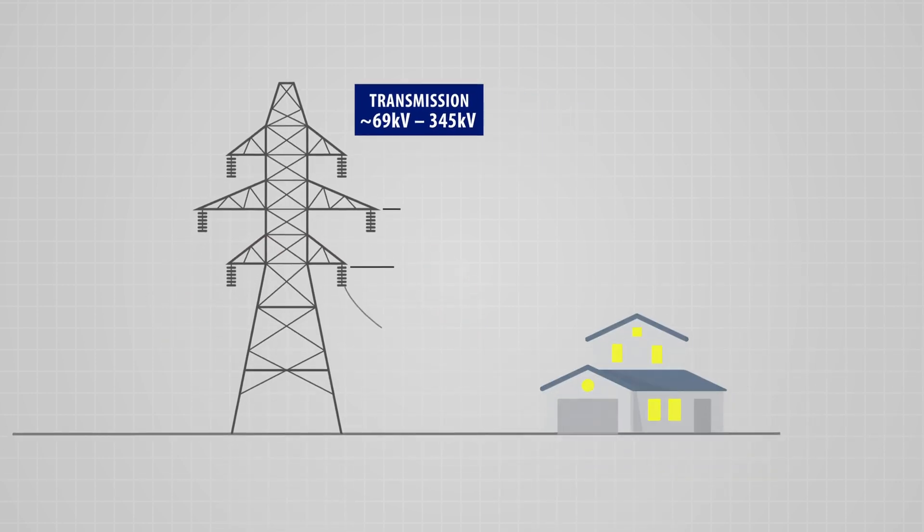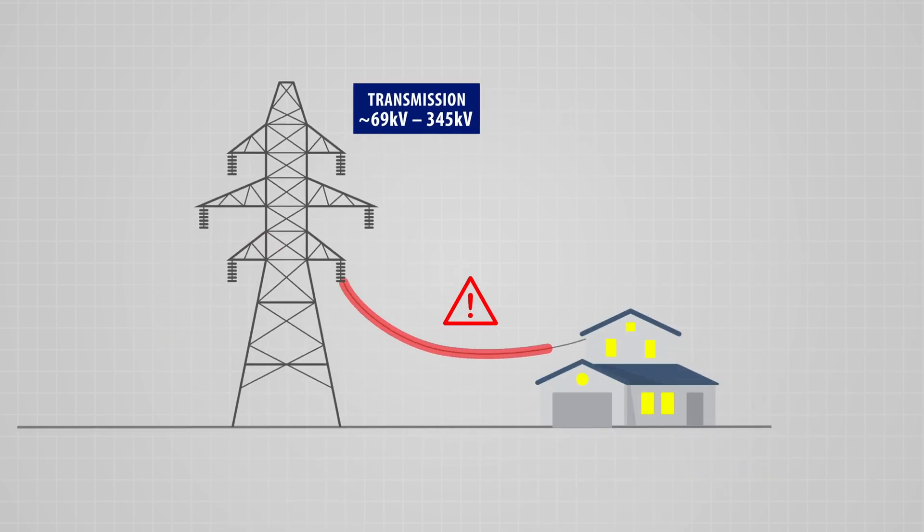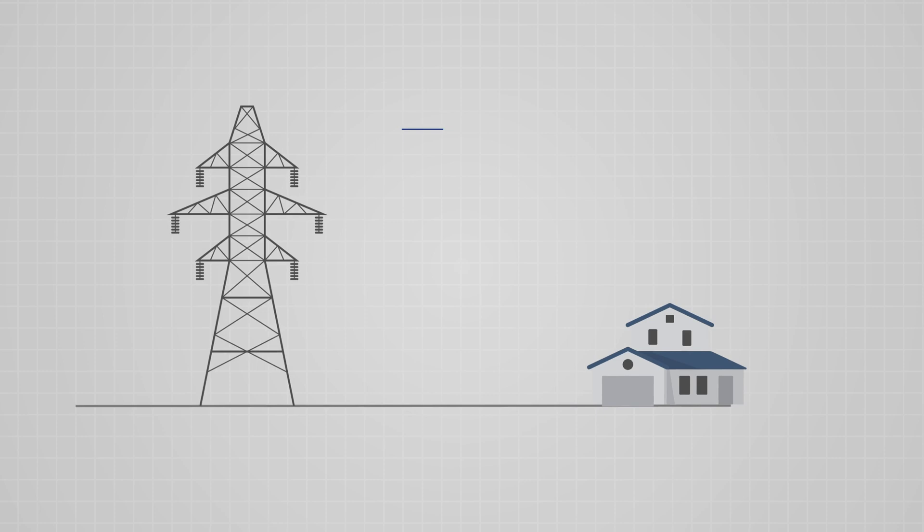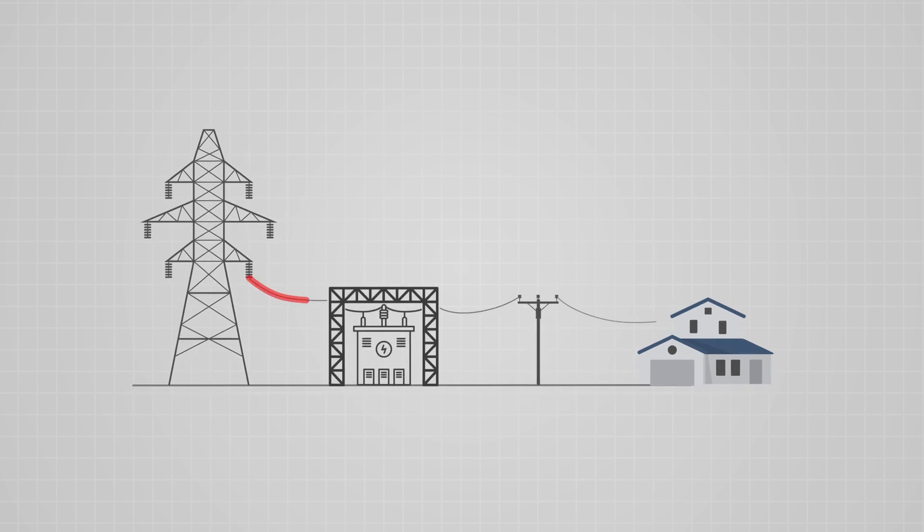Except for a few industrial customers, transmission line voltage is much too high to deliver power to the end user. Before electricity can be safely delivered on the more localized distribution system, it needs to be stepped down to a lower voltage.